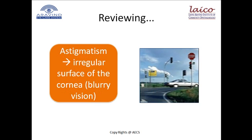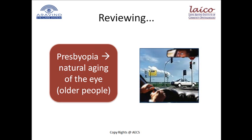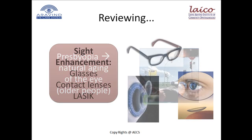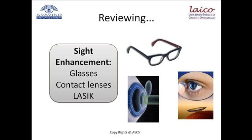Astigmatism is caused by an irregular surface of the cornea, causing a generally blurry vision. Finally, presbyopia, the natural aging of the eye, also produces difficulties to see close objects. The three most commonly used sight enhancement methods are glasses, contact lenses, and LASIK eye surgery.